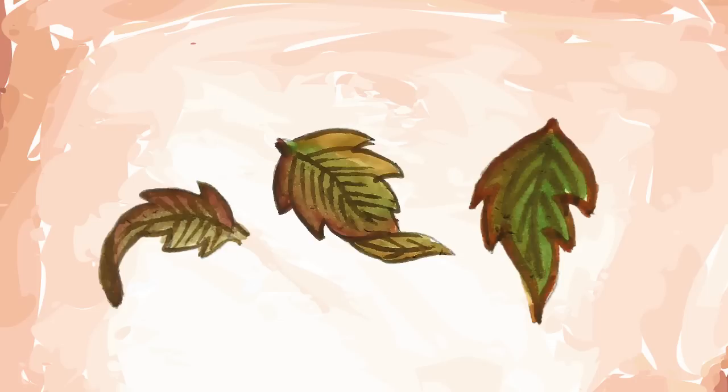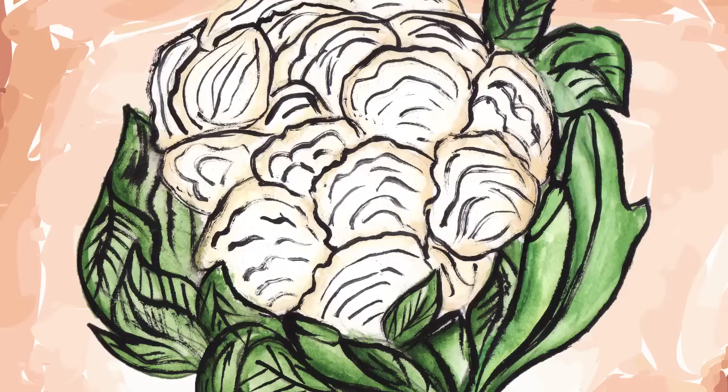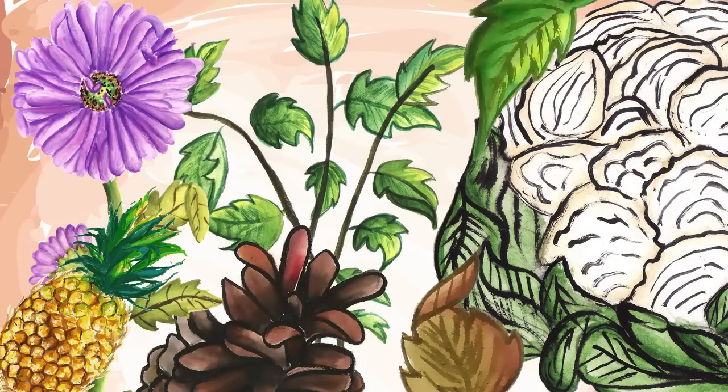Besides sunflowers and leaves, Fibonacci numbers also show up in the spirals of the pineapple, the pine cone and even the cauliflower. And who knows what yet lies to be discovered?